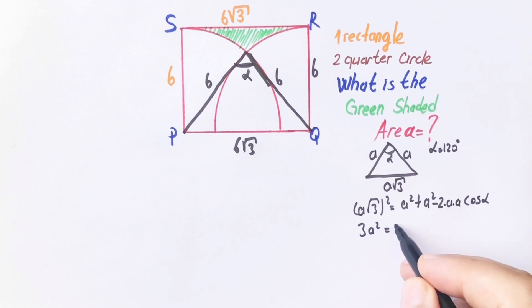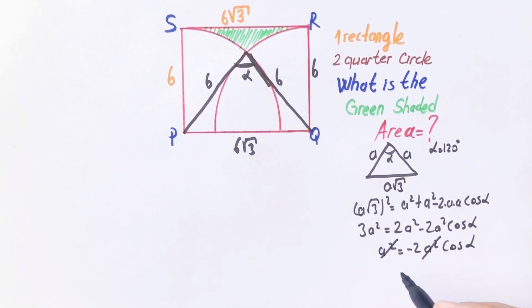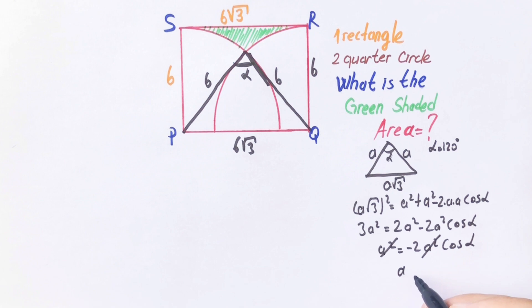So 3a squared equals 2a squared minus 2a squared cosine alpha. a squared equals minus 2a squared cosine alpha. The a squared terms cancel, so cosine alpha is going to be minus 1 over 2.